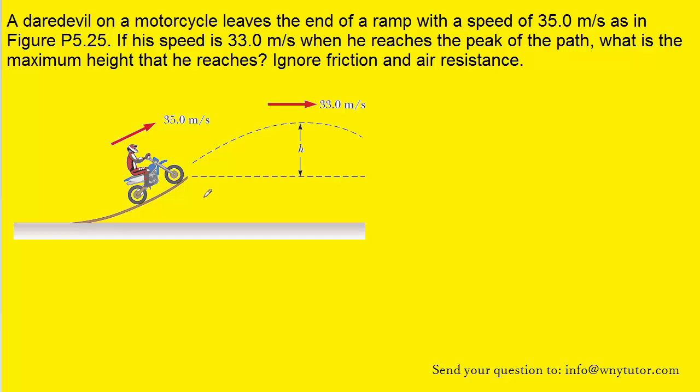At first glance, this problem looks like it might be a projectile motion question, but the problem with using that approach is that we don't know the angle at which the motorcyclist is launched into the air. And so without that angle, we would not be able to use kinematics and projectile motion to solve this question.